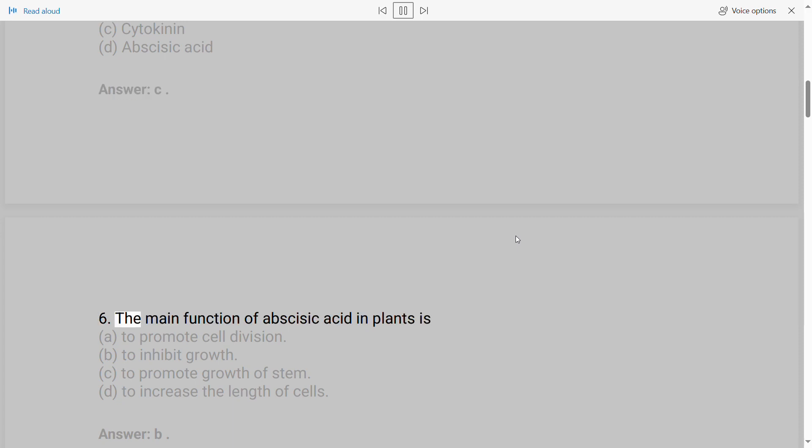6. The main function of abscisic acid in plants is A. To promote cell division B. To inhibit growth C. To promote growth of stem D. To increase the length of cells. Answer: B.